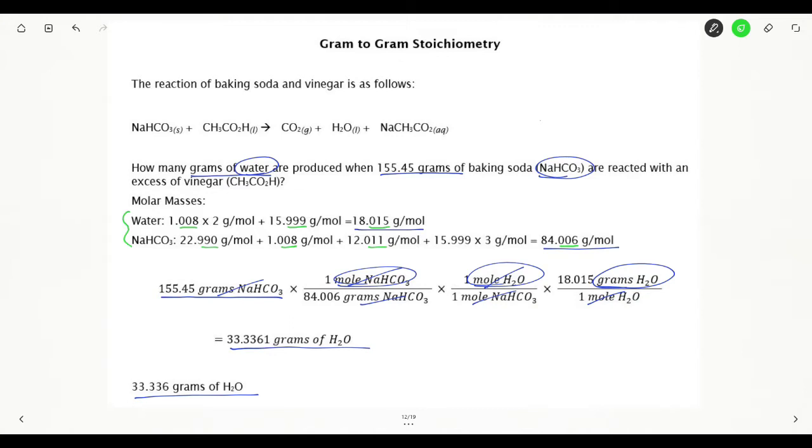So I started with my 155.45 that was given to me in my problem. That has five sig figs. Next, I have my molar mass. That has five sig figs as well, so I'll put that five there.